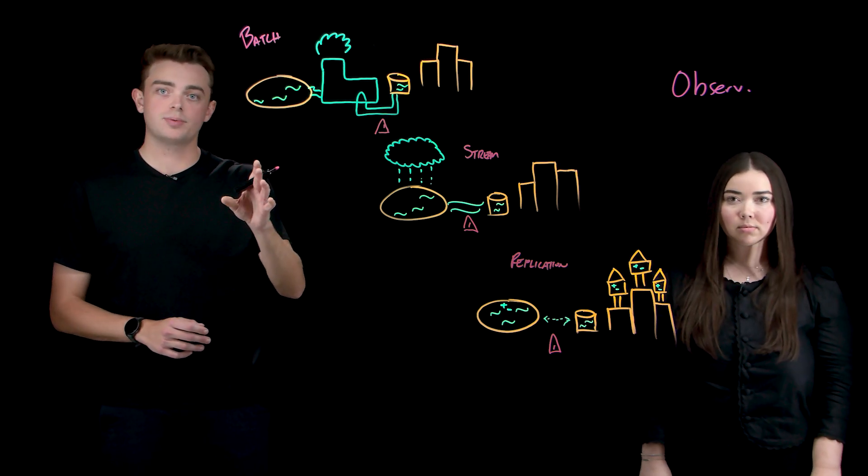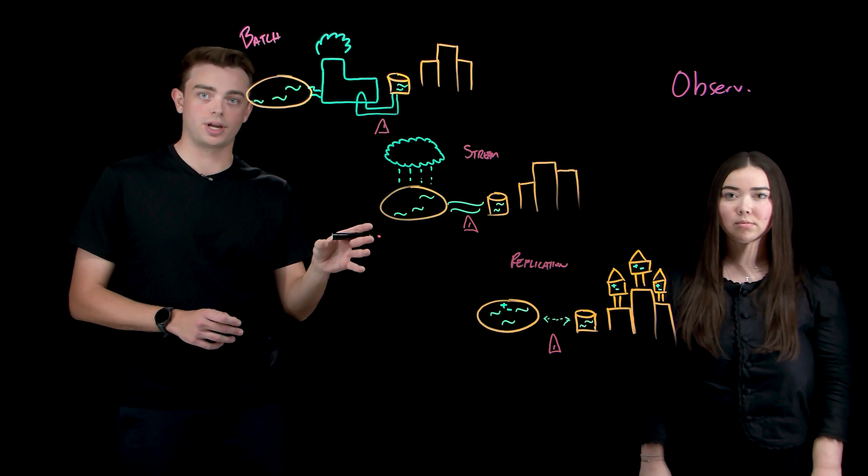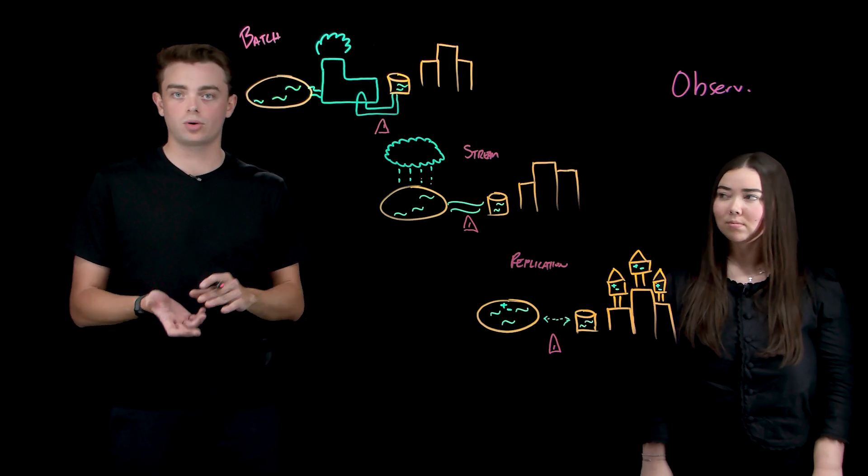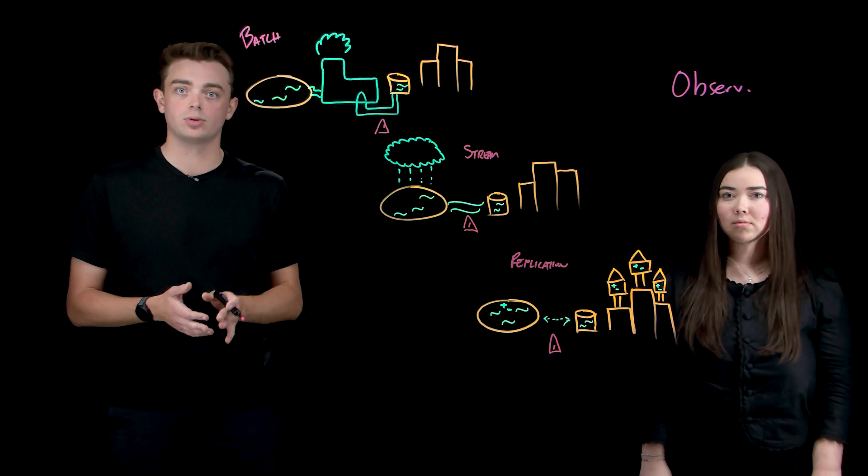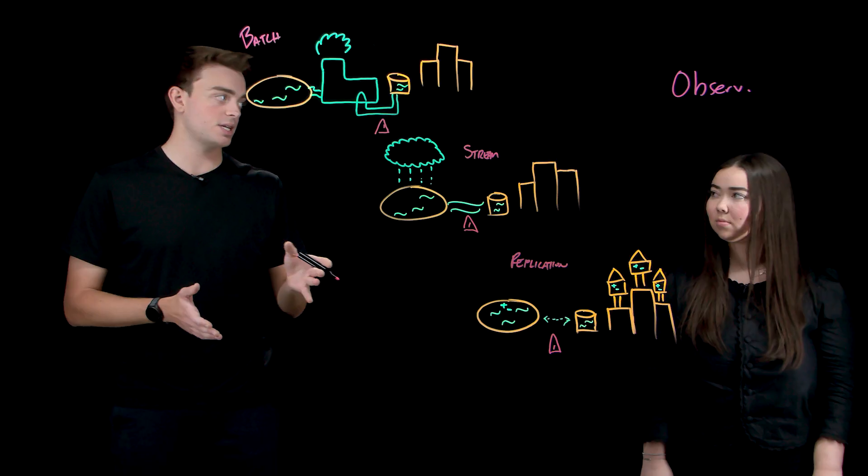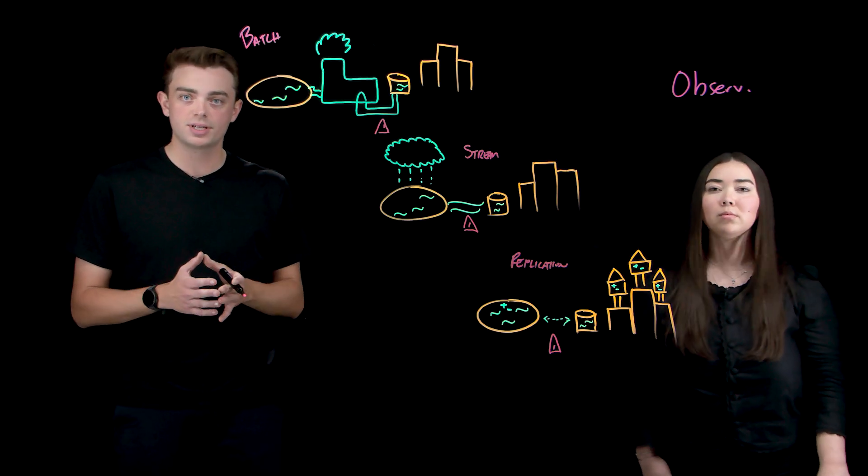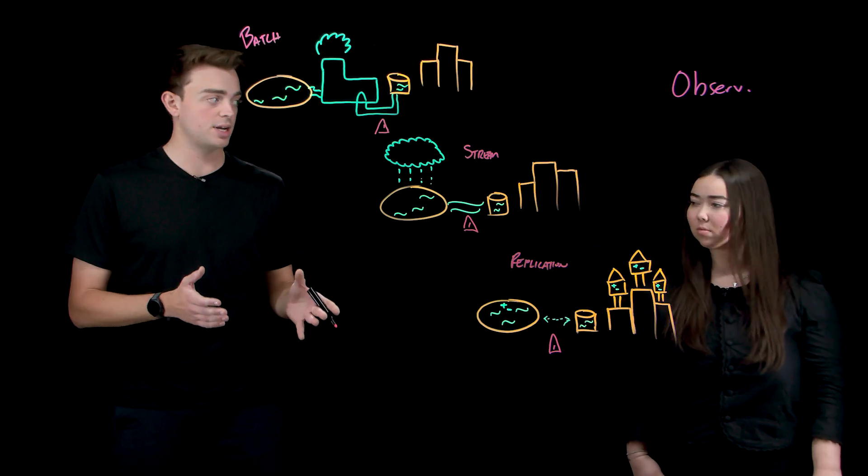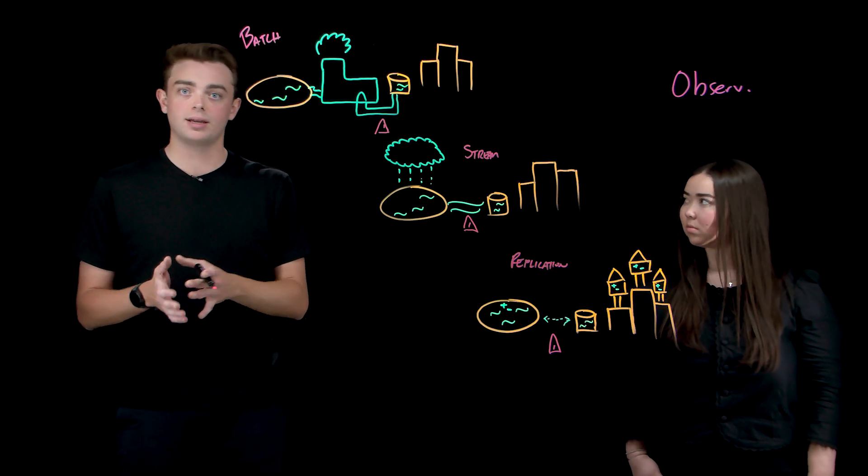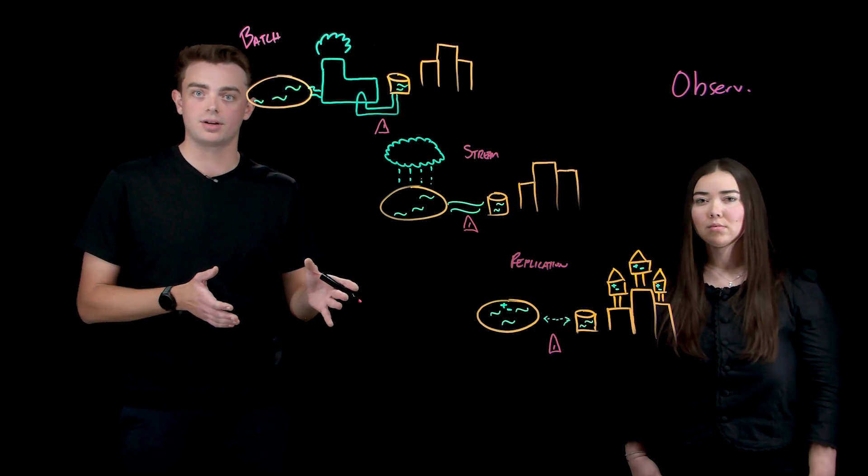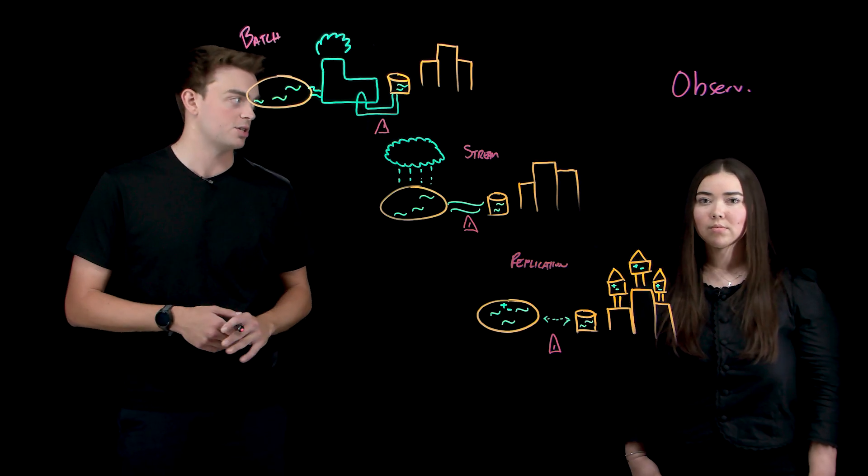Each of these integration types—batch, streaming, replication, and observability—play an important role in building resilient, scalable data systems. Just like a city can't function without its well-engineered water filtration system, a business can't operate without robust data integration. It turns messy, disconnected inputs into clean, reliable data flows that power your entire organization.